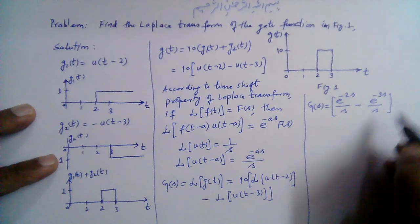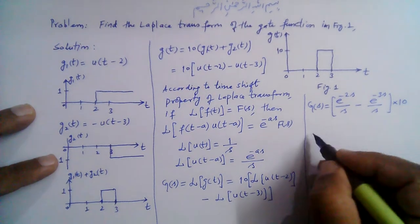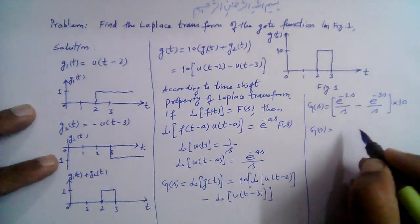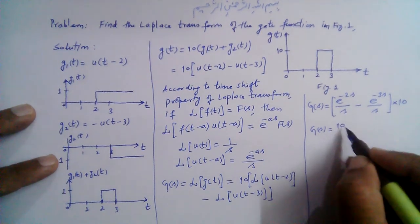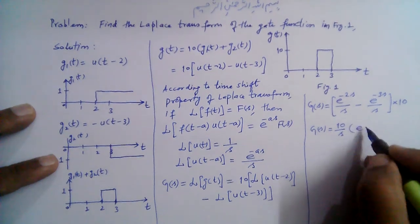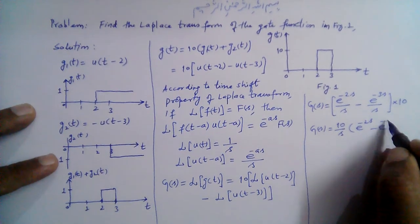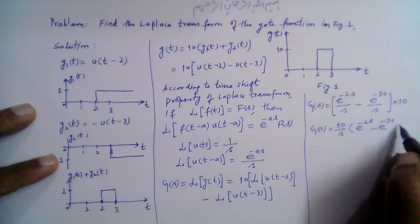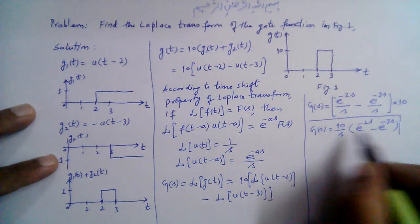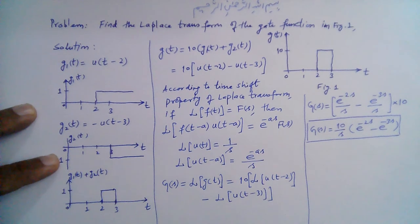These are multiplied by 10, so G(s) = (10/s) · [e^(-2s) - e^(-3s)]. This gives us the Laplace transform of the given gate function.